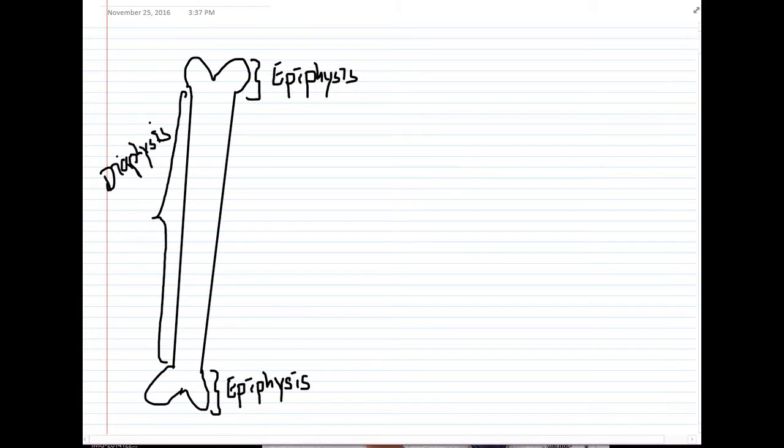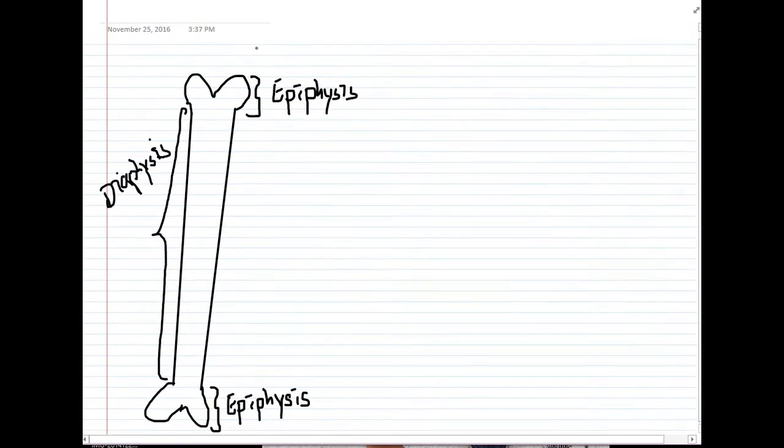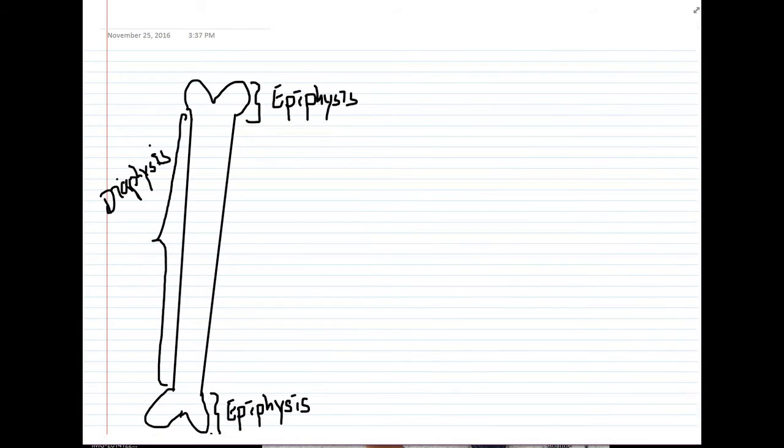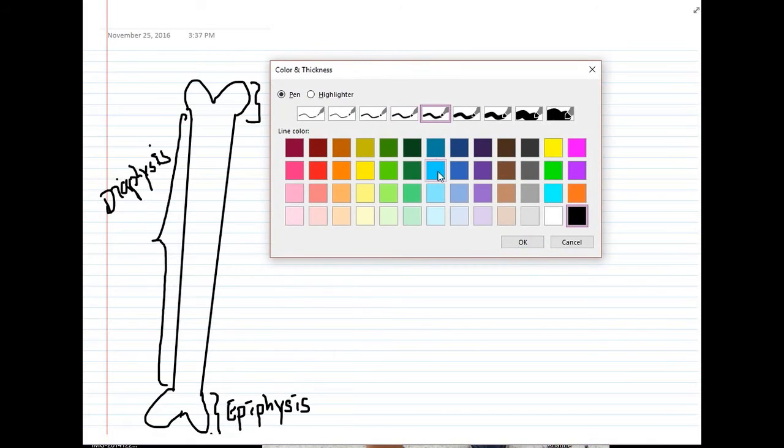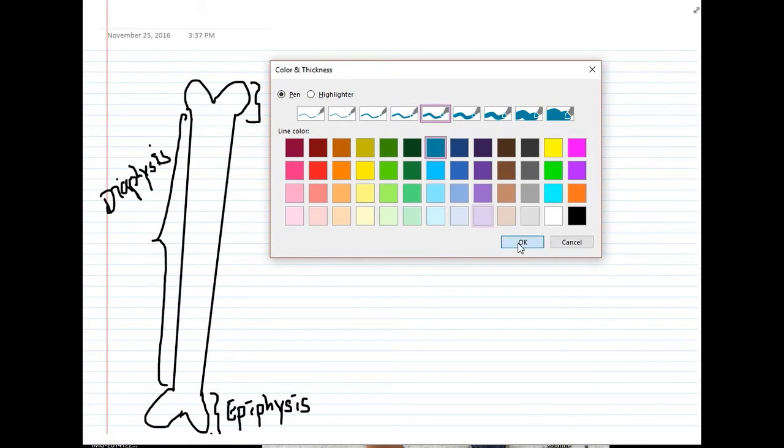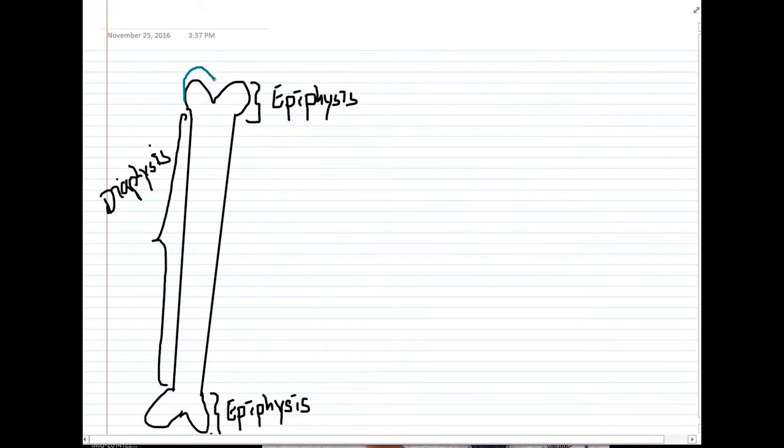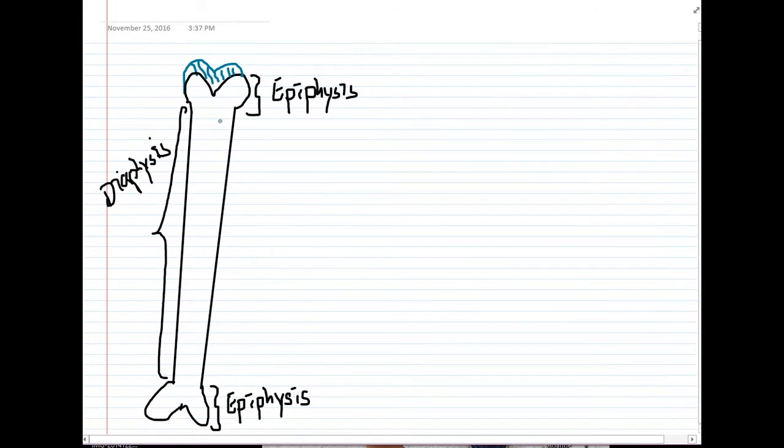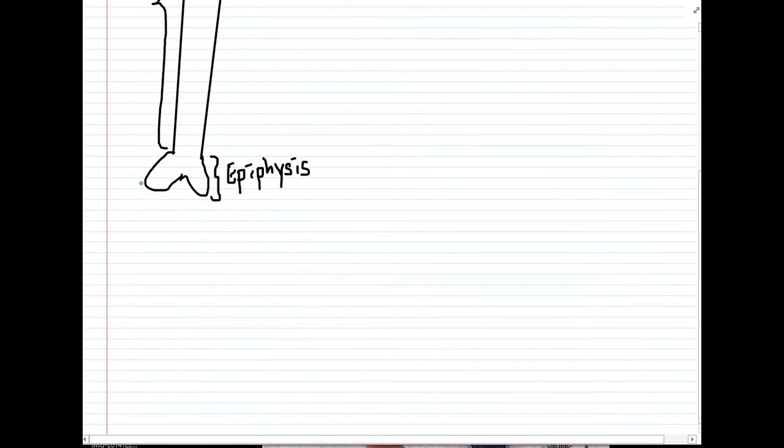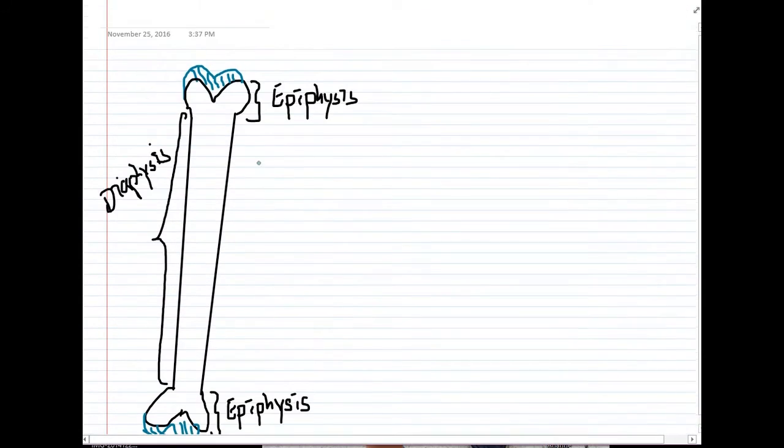So the proper name for a joint is an articulation. And any time you form a joint this way, you want to protect it with a little bit of cartilage. Just having cartilage there is going to reduce the wear and tear of the actual bone as you move the joints, and it's going to help reduce the friction a little bit as well. So this cartilage at the ends is called articular cartilage.